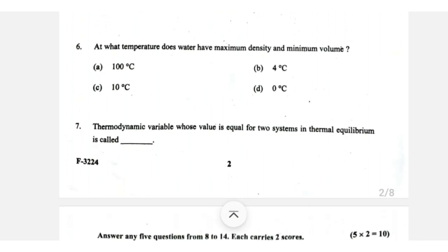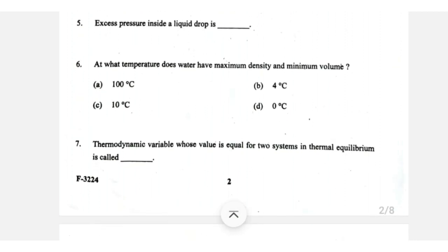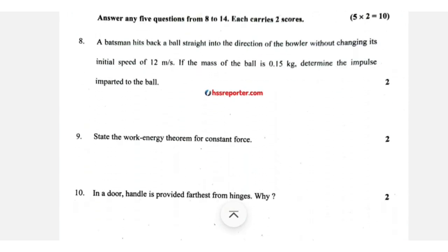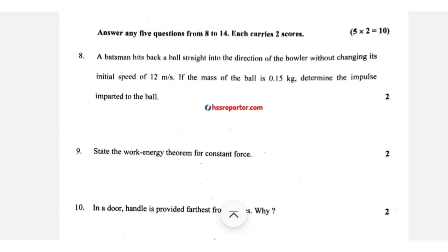The thermal equilibrium question: the variable whose value is equal for two systems in thermal equilibrium with a third system is temperature. That is the zeroth law of thermodynamics.